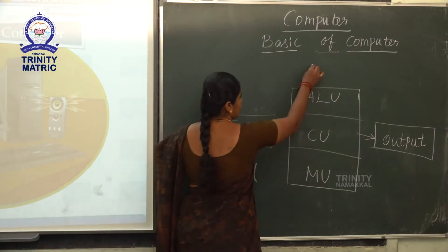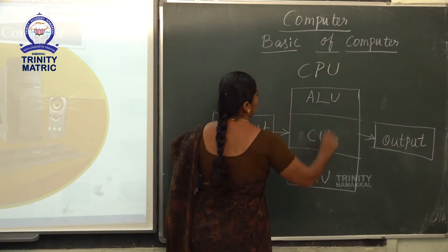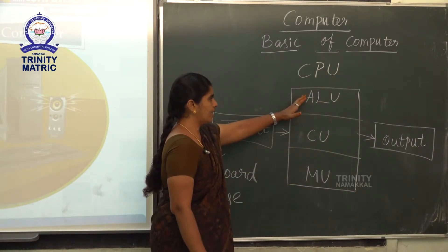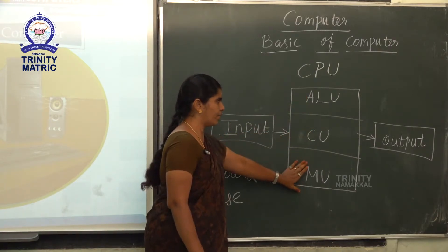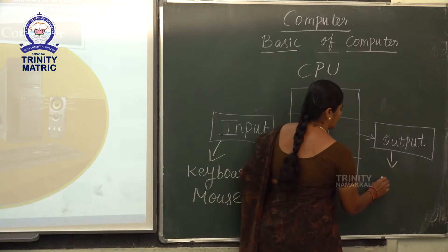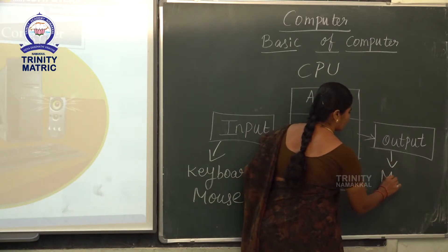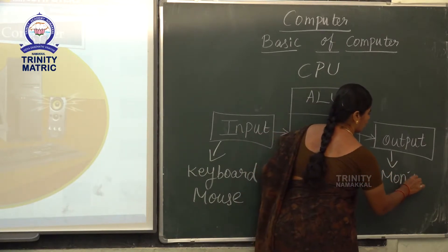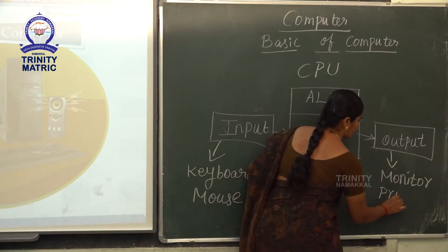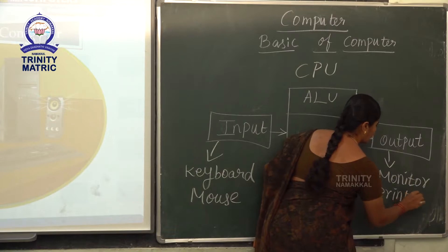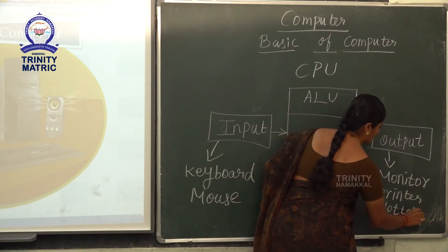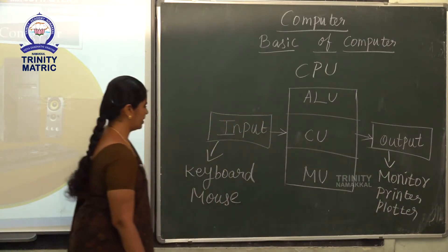This is the CPU. As I told you, the CPU is divided into three: Arithmetic and Logic Unit, Control Unit and Memory Unit. Output devices are: monitor, printer, plotter, etc. We have so many parts in output devices.